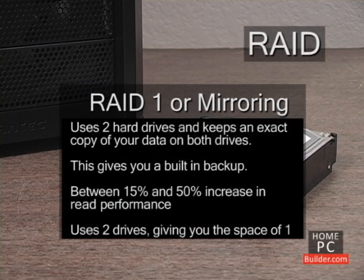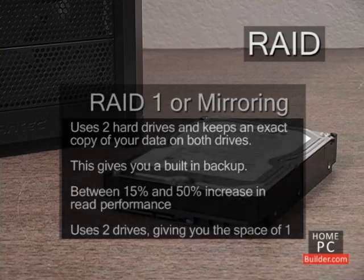RAID 1, sometimes referred to as mirroring, uses two hard drives and keeps the same data on both. This gives you a built-in backup at all times and a 15% to 50% performance increase in reading data. The downside is that you're using two hard drives but only getting the space of one — so if you have two 750 GB drives, you're only getting 750 GB of usable hard drive space.